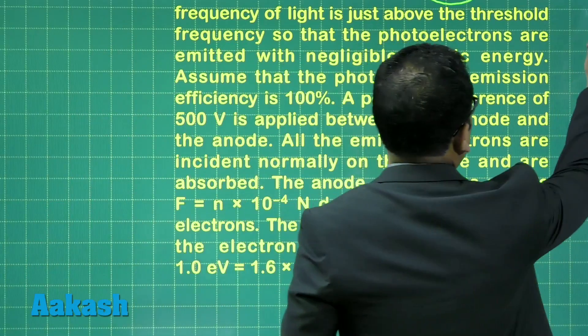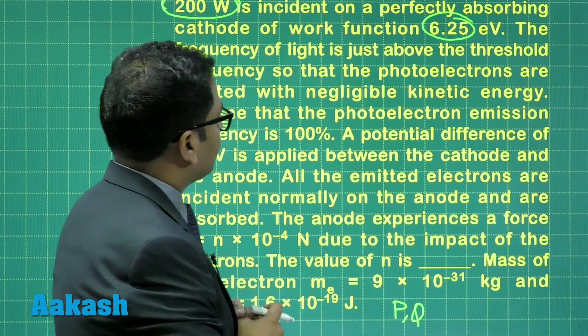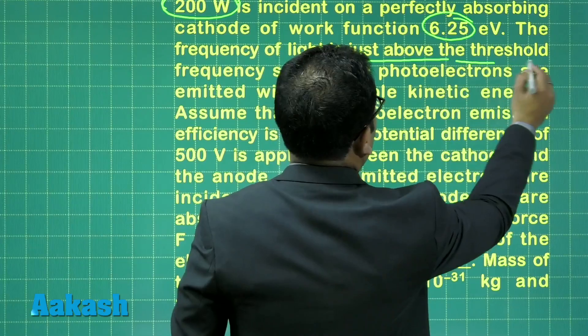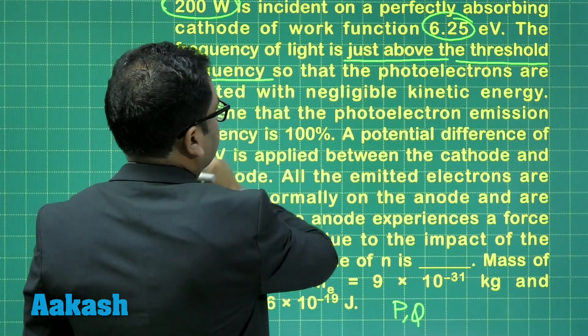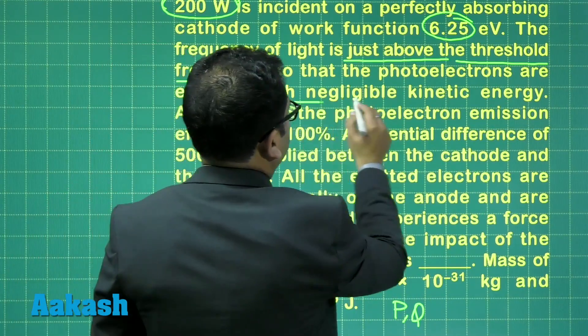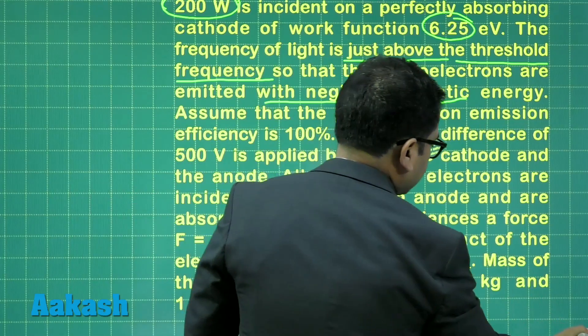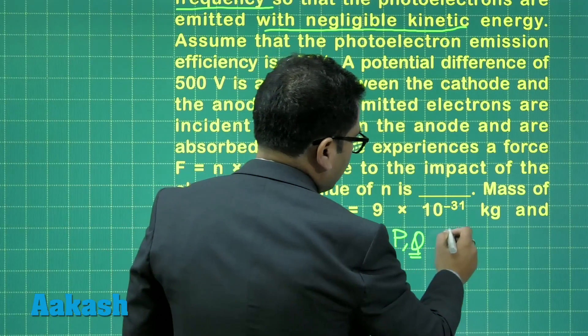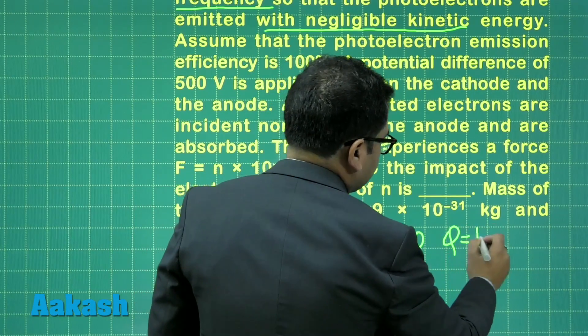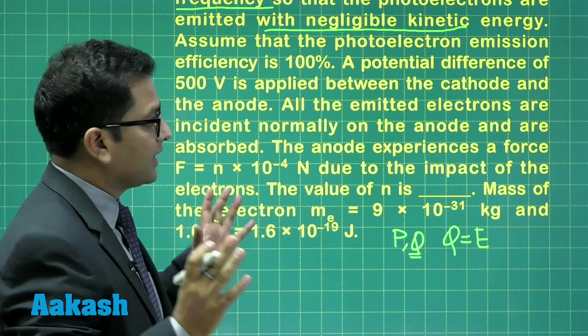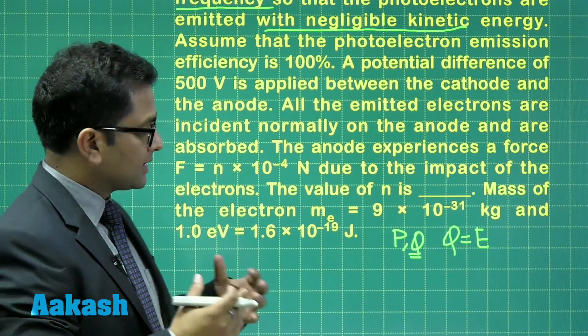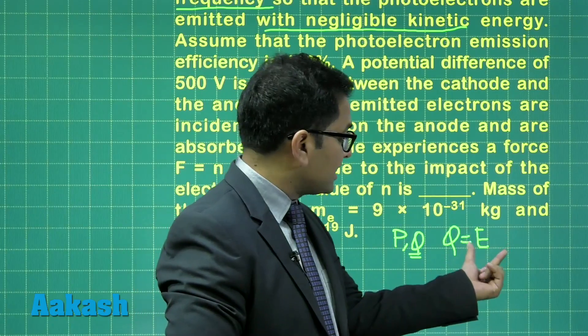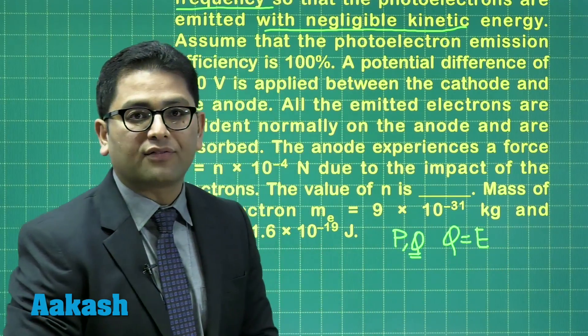Now another important data has been given here. The frequency of the light is just above the threshold frequency. Now just notice the word, just above the threshold frequency so that the photoelectrons are emitted with negligible kinetic energy. In other words, the phi, the work function, would also be equal to energy of one photon as per the data, which is very straightforward. Because it says that the frequency is just above the threshold. So in that case, energy of light incident would be equal to work function of the metal.